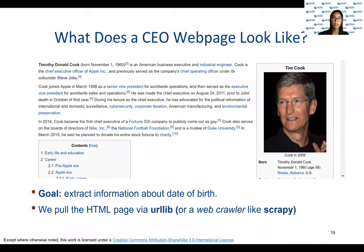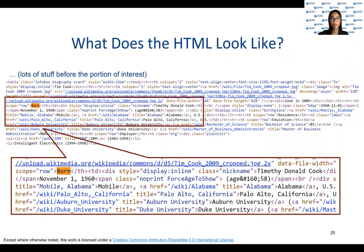Let's take a look at the web page of one CEO. Notice that the date of birth is in a special area of the web page over here. Looking at the underlying HTML of the web page, we can see that the born information that we want to pull is embedded in the vCard table shown at the top. We will do this using the language called XPath.